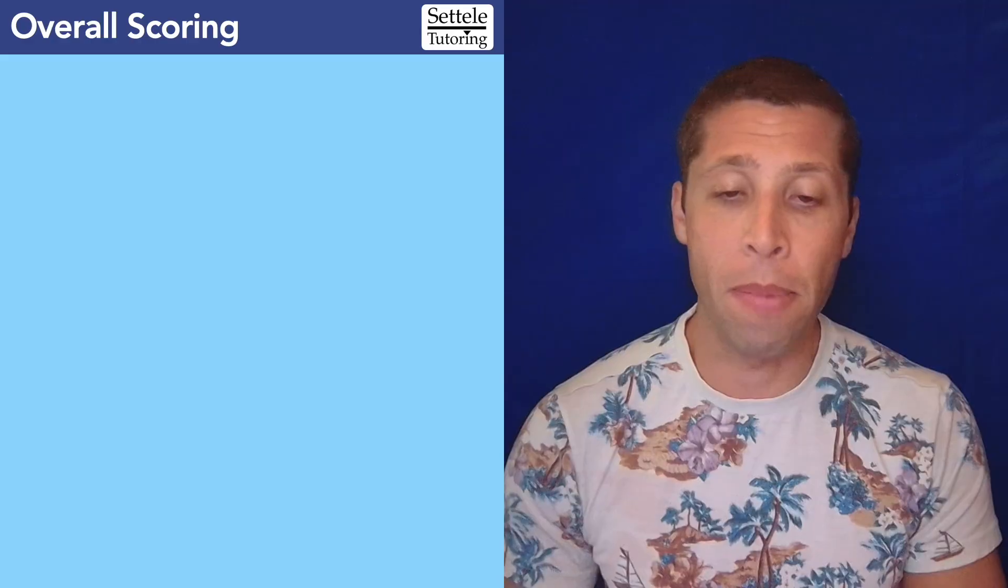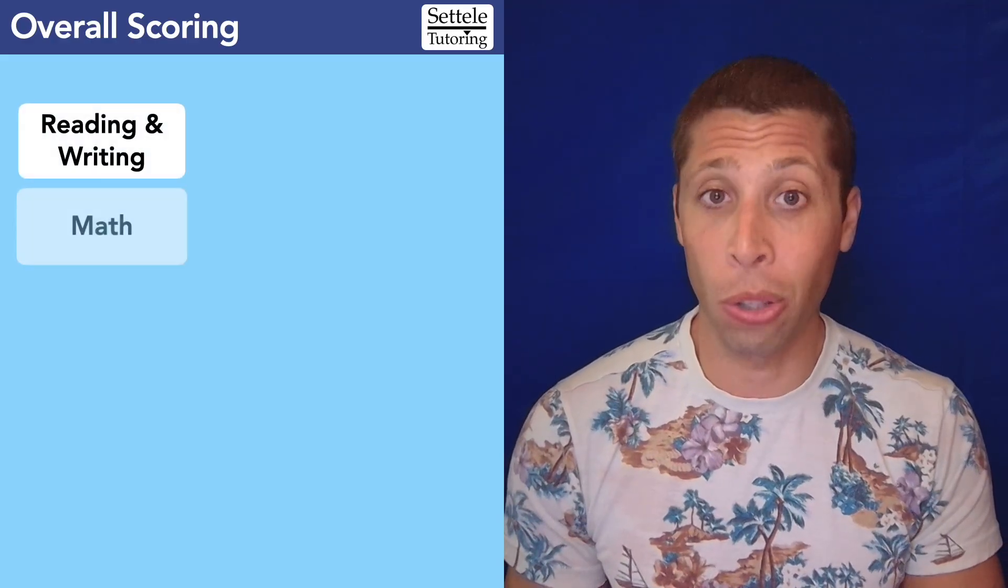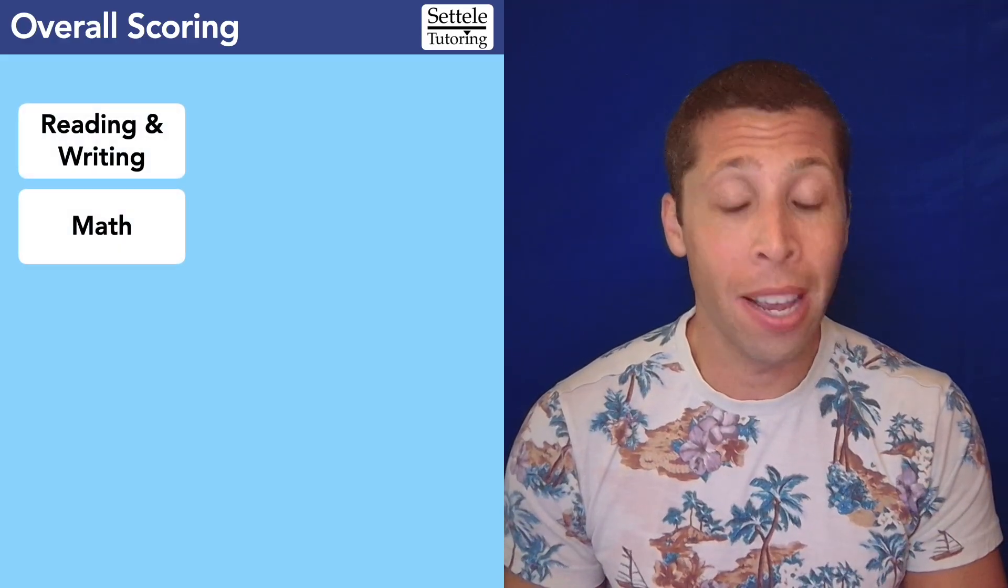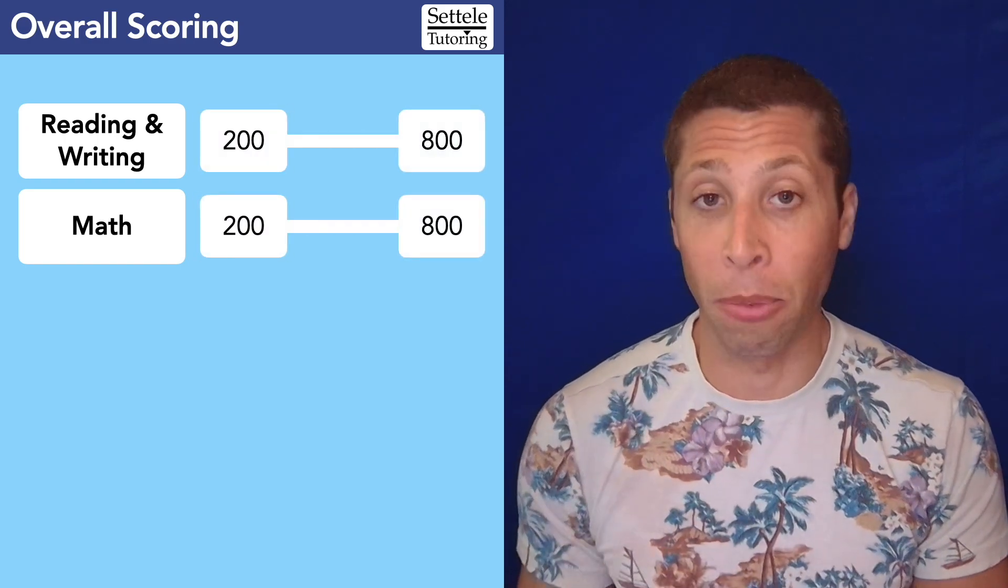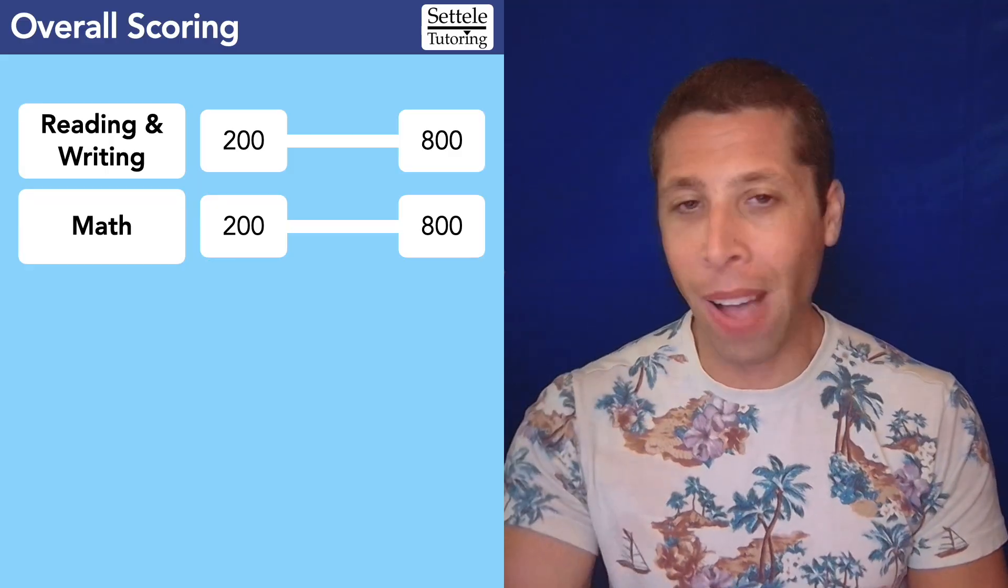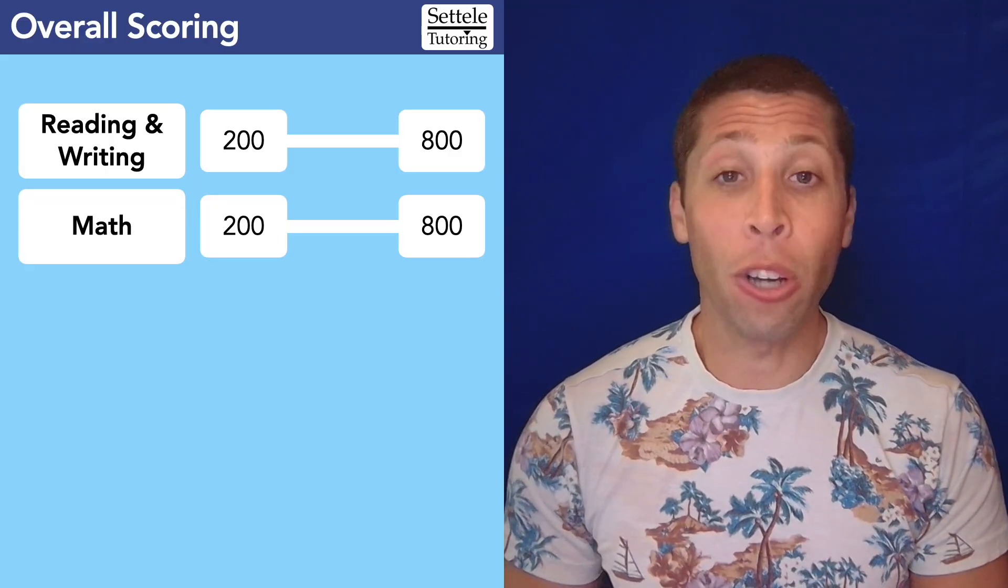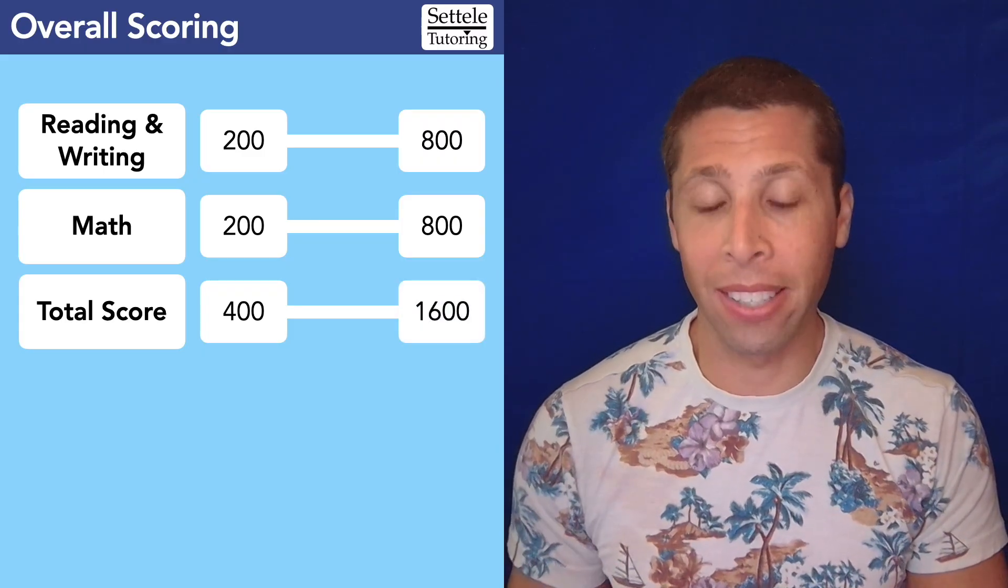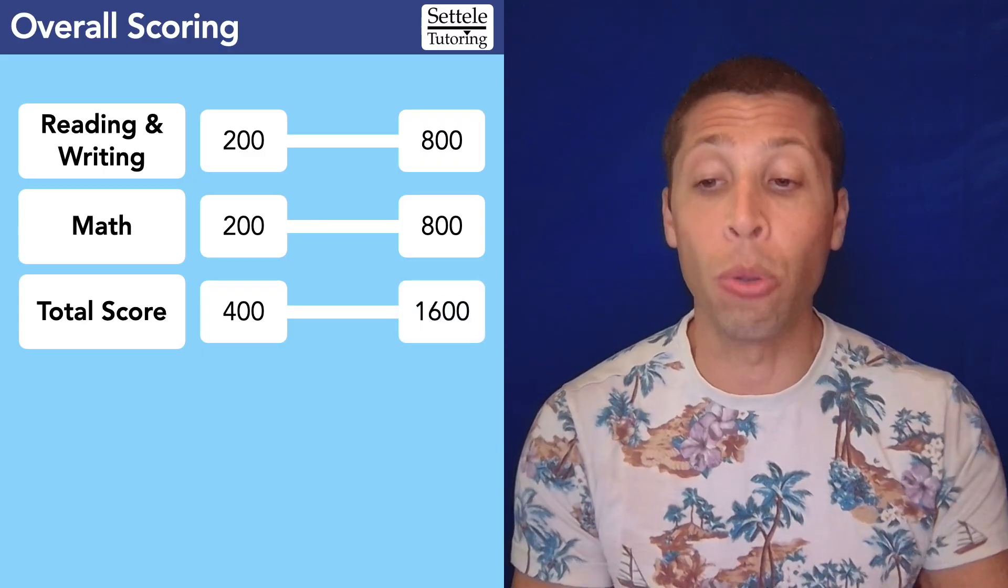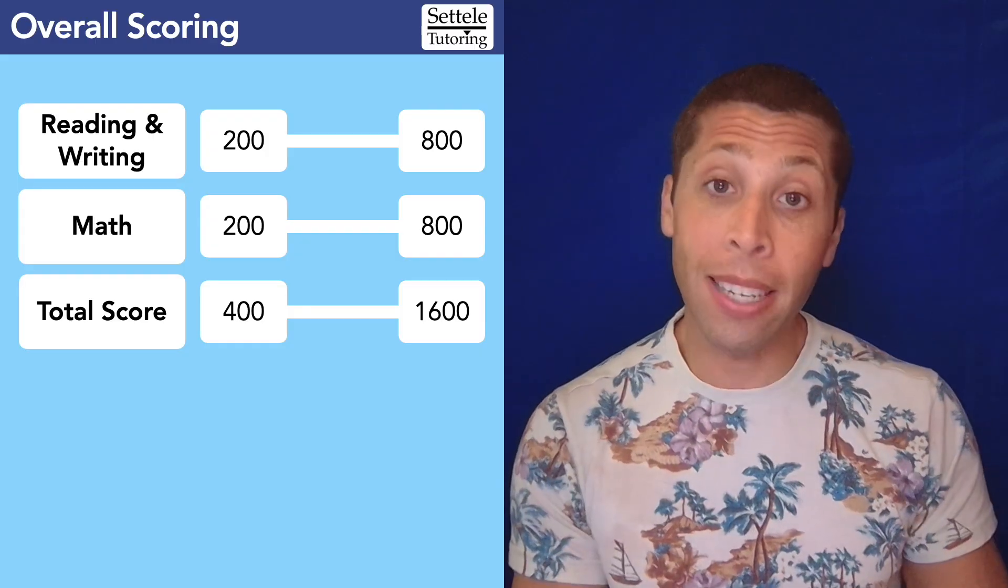Hopefully this is already familiar to you. The SAT has two subjects—reading and writing is one, math is the other—and those are on a scale from 200 to 800 per subject. Why doesn't it start at zero? I don't know, that's just the way it goes. The total score is found by adding those two subjects together, so the overall SAT is on a scale from 400 to 1600.